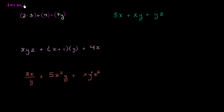So in this example, you have three terms. The first term is two times three. The second term is just the number four. And the third term is seven times y.